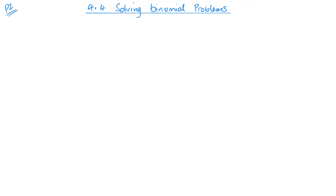Often when we have a binomial expansion we don't need to expand it fully. Sometimes we might need to expand the first three or four terms, but there are other times where we have to expand for a specific term, like the x cubed term or the x to the power of 5 term. And sometimes that is mainly about the coefficient. So it's useful to understand how to quickly find a specific term within that expansion.